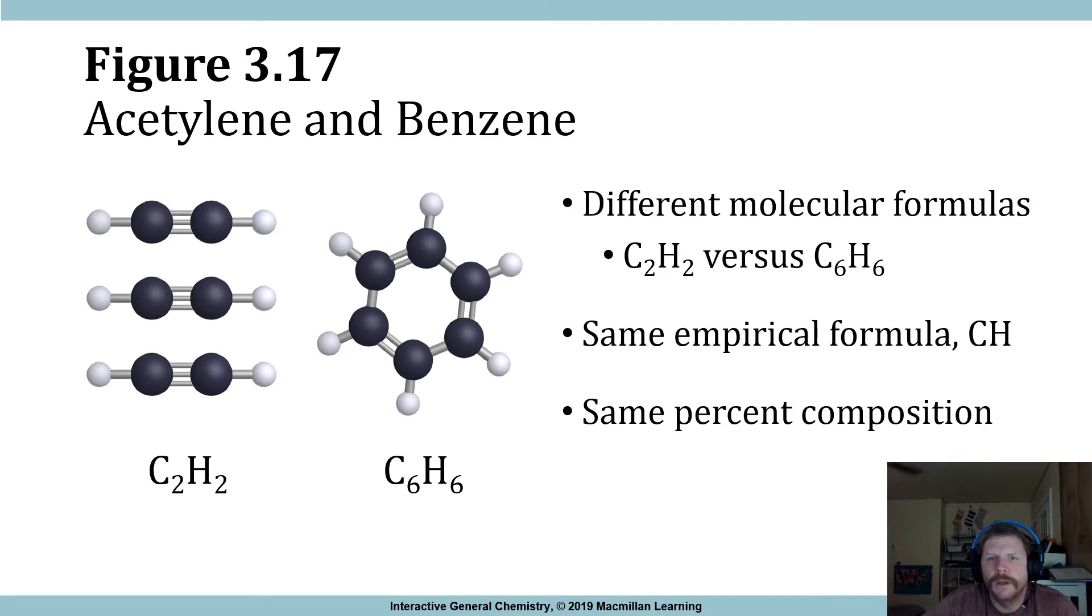So what we can compare is we can compare different molecules to one another. Acetylene and benzene. This is acetylene right here, C2H2. If you ever watch any home improvement shows or anything like that, or if you are a welder yourself, you're probably familiar with acetylene, or an acetylene torch. C6H6 is benzene. These both have the empirical formula of CH. They have the exact same percent composition.